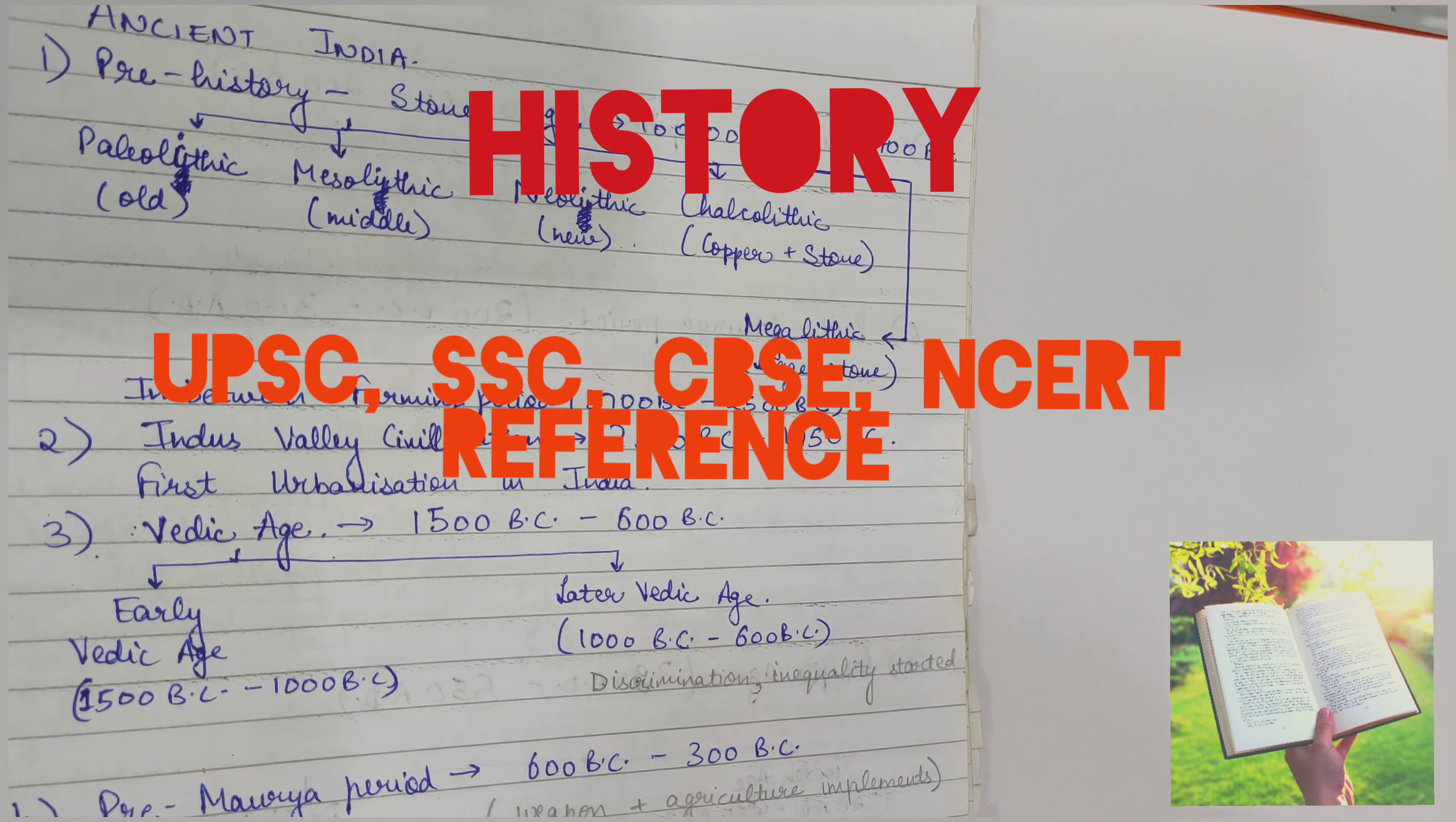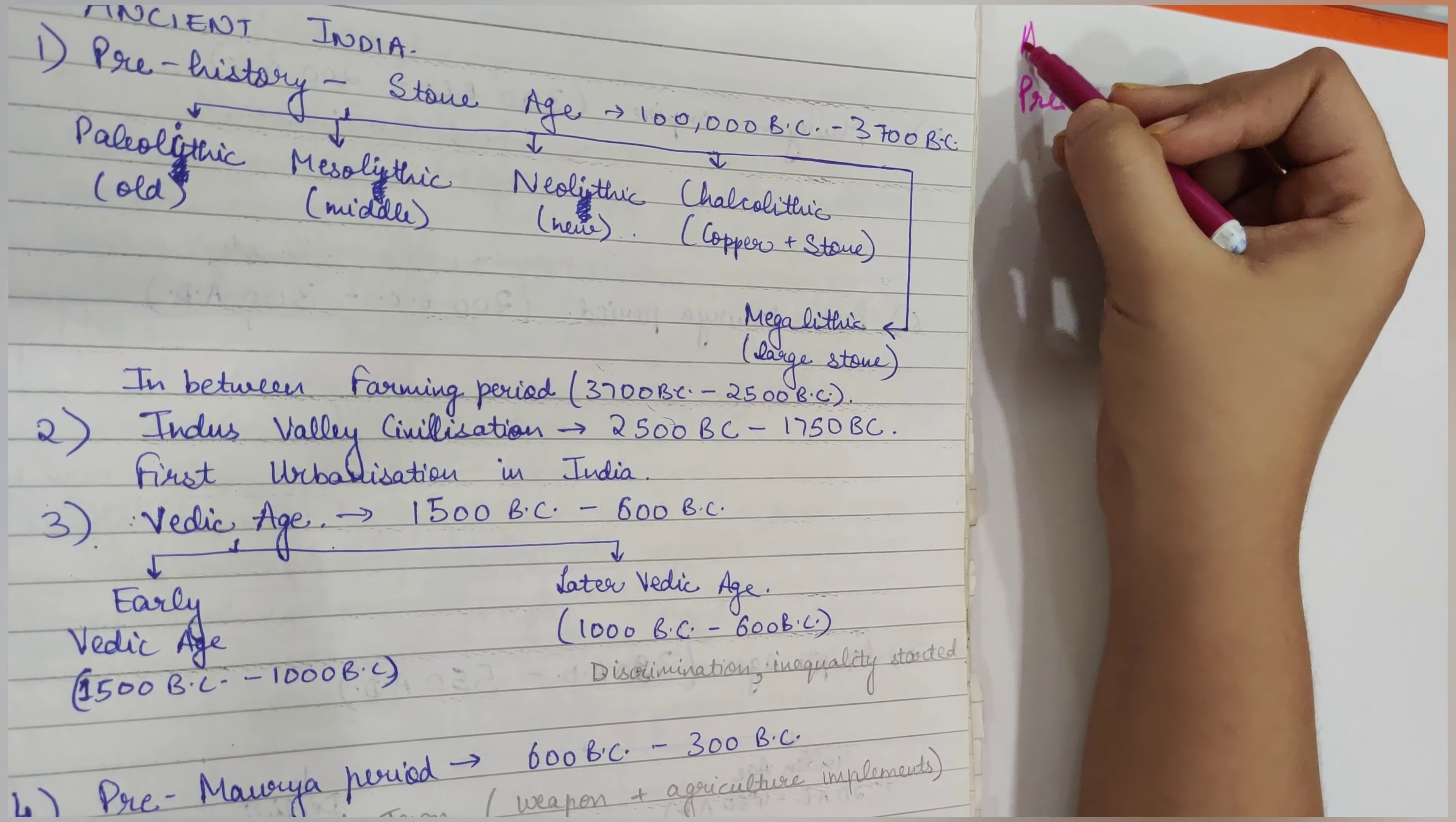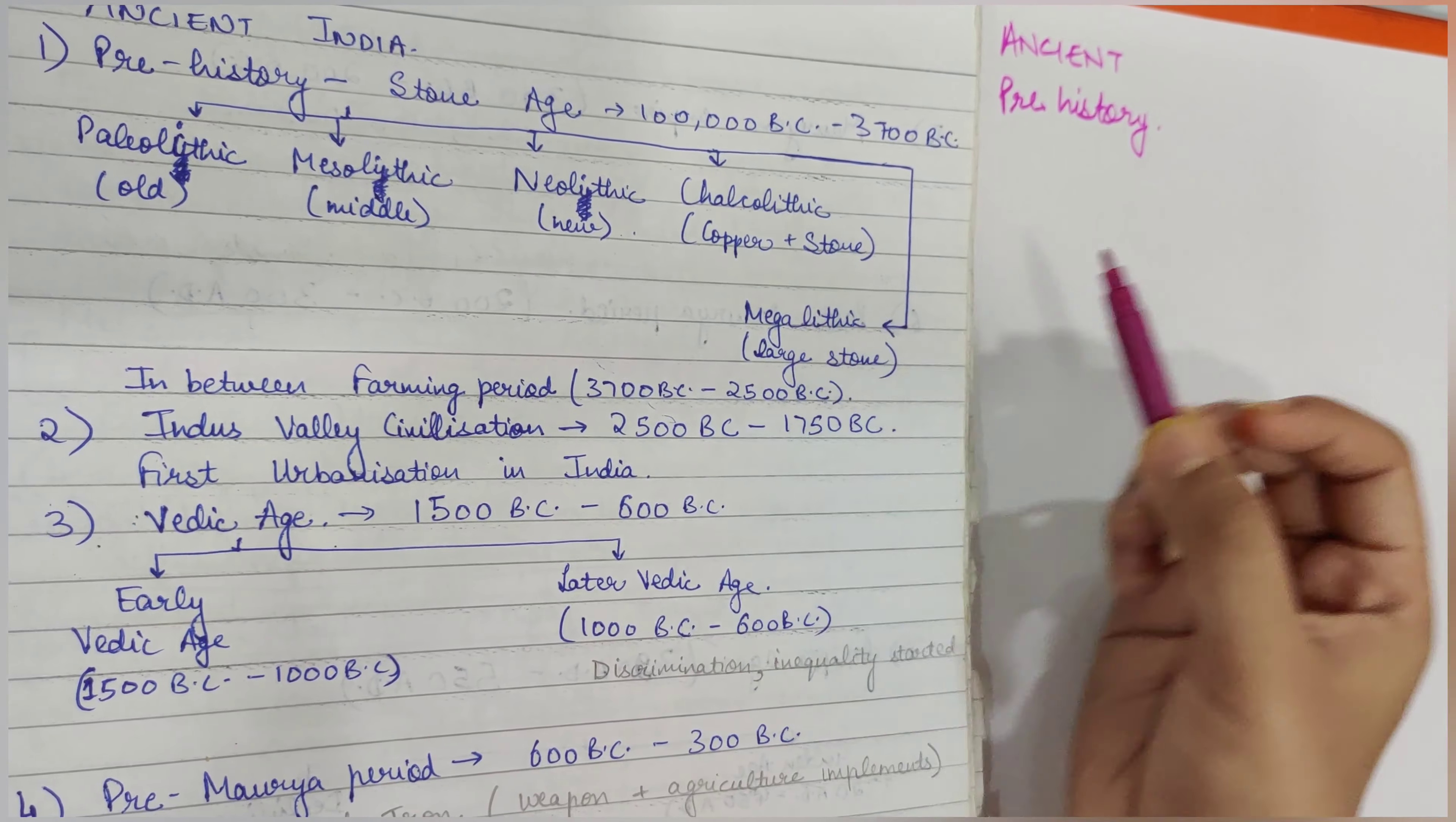First, we will go chronologically starting with prehistory. This prehistory comes under Ancient India. In Ancient India, we study prehistory which is divided into five categories.